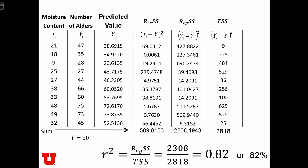Let's compute the r-squared and F statistic from our Alders example. In the table, we have the values of x, the values of y, and our predicted values.